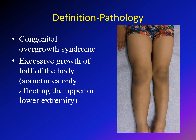Hemihypertrophy or hemihyperplasia is a congenital overgrowth syndrome in which there is an excessive growth of half of the body. However, sometimes the excessive overgrowth affects only the upper extremity or the lower extremity — it does not affect the whole entire half of the body.